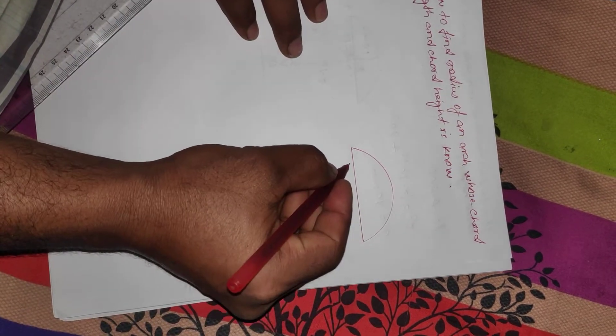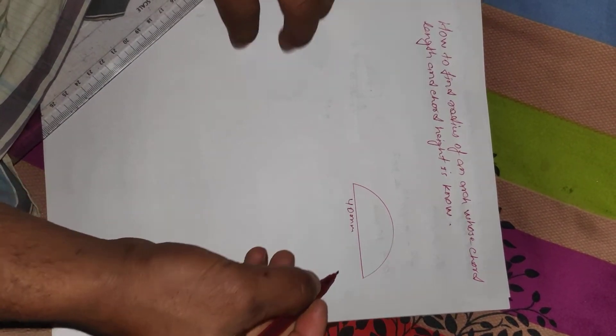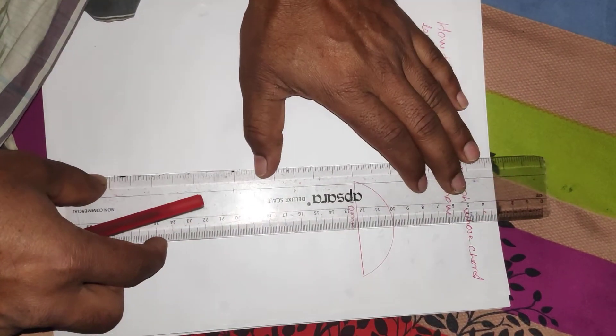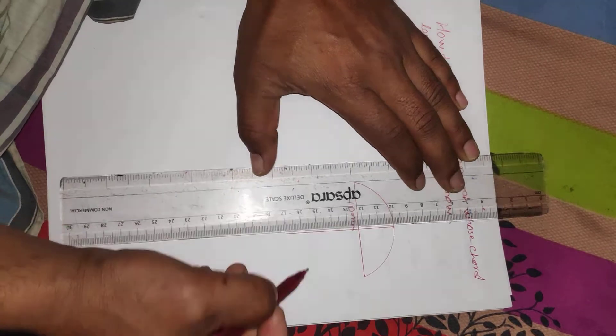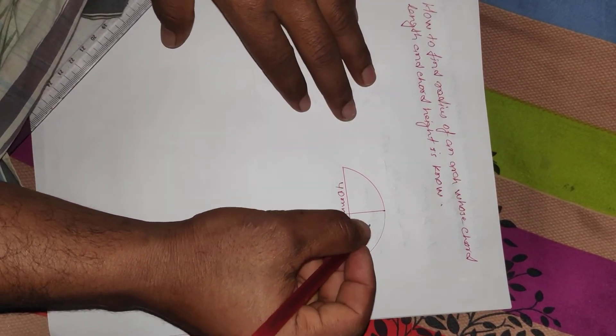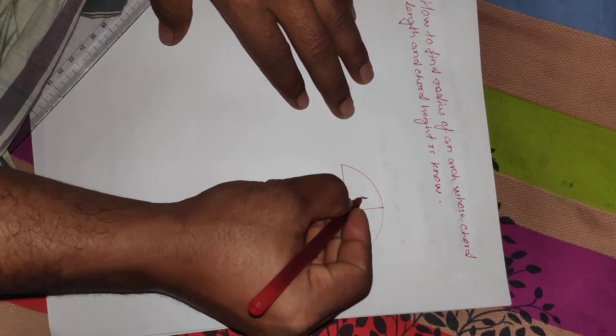Suppose that this is 40 mm. Then the chord height is 15 mm.